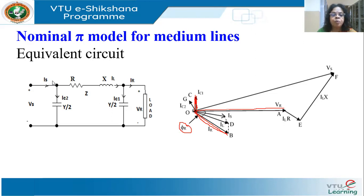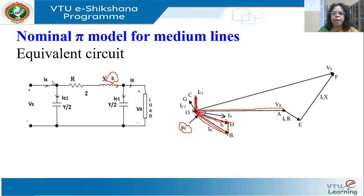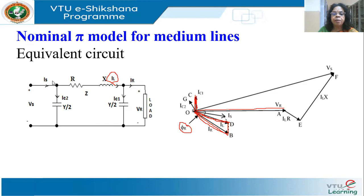What is IL? Applying KCL at this node, IL is equal to IR plus IC1. I have IR and I have IC1 — when I add the two I get IL. So the first step: draw Vr, draw IR at an angle phi R, draw IC1 leading Vr by 90 degrees, and add the two to get the line current IL.